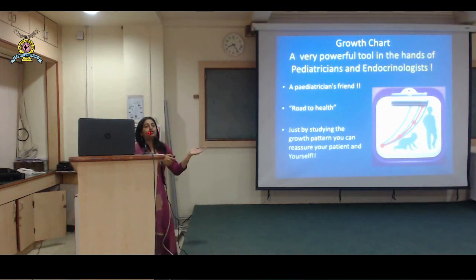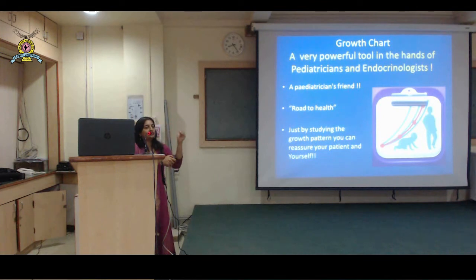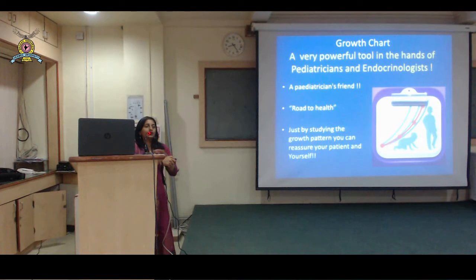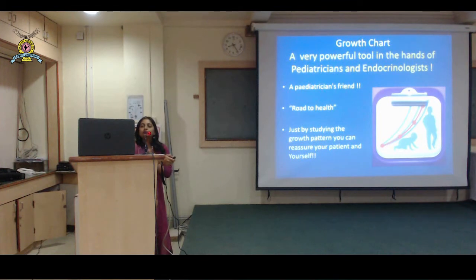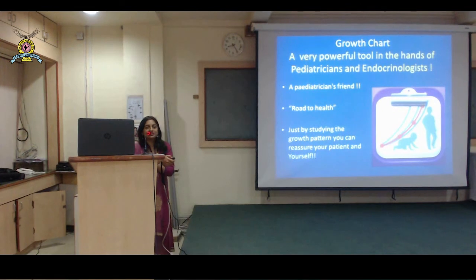Lastly, if you follow the trends and plot all the parameters, and you see a trend that the child is plateauing, shooting up, or going down, you know that this is an abnormality. Based on the trend, you can make a clinical diagnosis - we make clinical diagnoses based on how the growth curve looks. So it is not only the pediatricians' friend; it is a doctor's best friend.